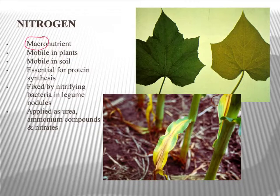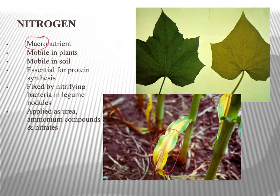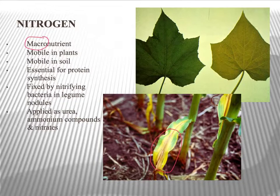Nitrogen is mobile within the plant. What this means is that the old leaves can go very yellow because the plant has taken the nitrogen out of them and sent it up to the new leaves. So the new leaves will look nice and green but the old ones will be quite yellow. This tends to happen with nutrients that are mobile within the plant — the plant is able to take it from one place to another as and when it's required.